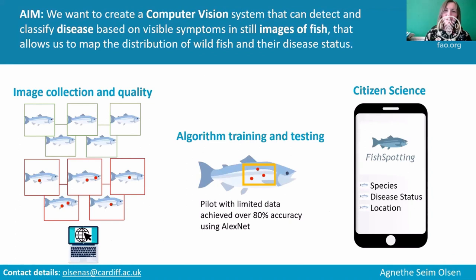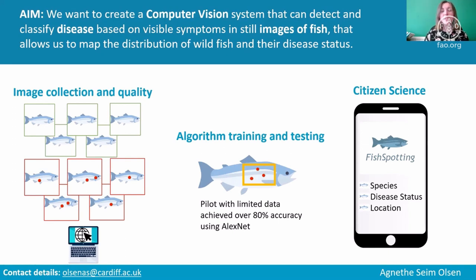The aim of this project is to create a computer vision system that can detect and classify disease based on visible symptoms in still images of fish. We also want to map the distribution of wild fish and their health status. We're starting with freshwater fish, currently looking at the Ogmore River, but hoping to expand to UK-wide rivers.